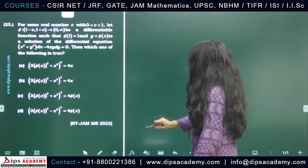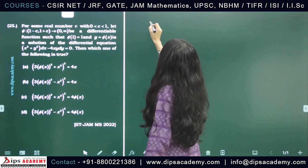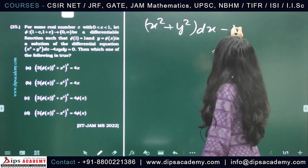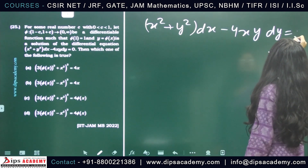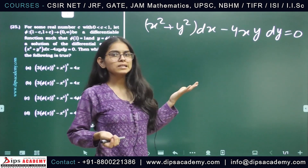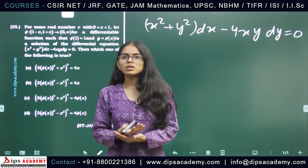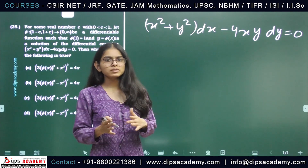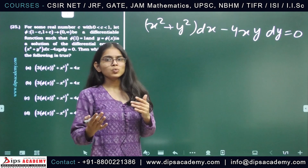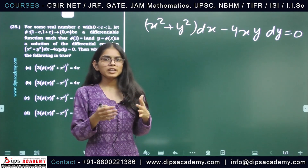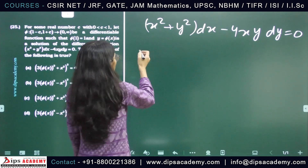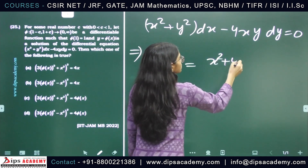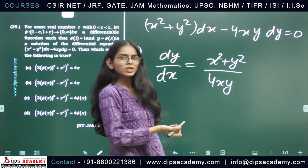We are given the differential equation (x² + y²)dx − 4xy dy = 0. As we can see, this is a homogeneous differential equation. Rearranging, we get dy/dx = (x² + y²) / (4xy). We know how to find the solution of a homogeneous differential equation.